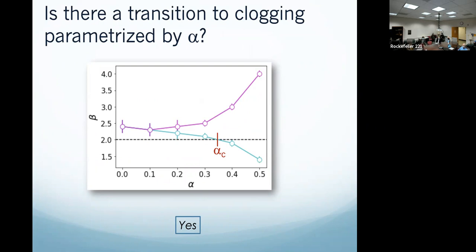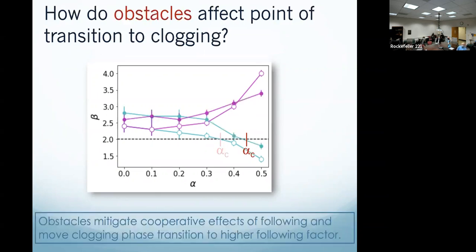What about what obstacles do? Do they make it easier to clog, or harder to clog? The answer is that they actually make it harder to clog. They move the clogging threshold out — they change the character of the power-law exponent. Obstacles mitigate the cooperative effects of following and move clogging to a higher following factor.